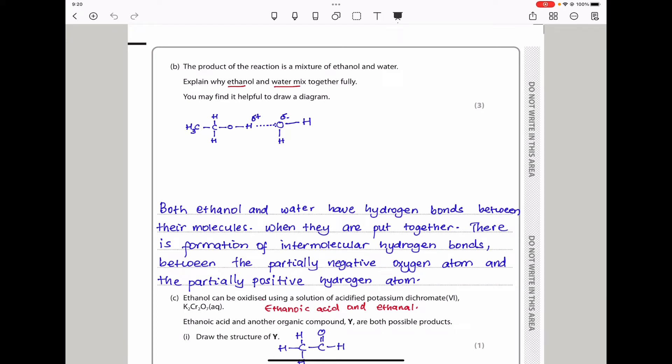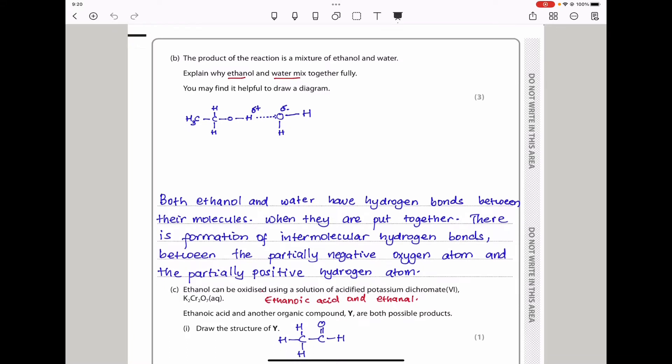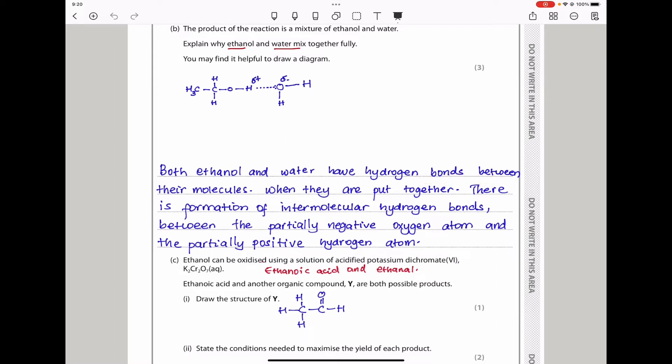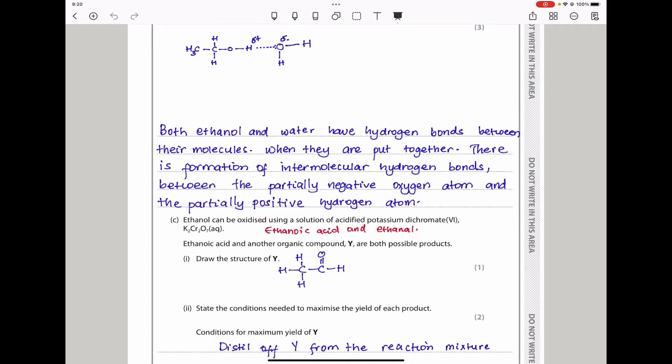The product of the reaction is a mixture of ethanol and water. They want you to explain why ethanol and water mix together fully. Here I draw ethanol. Ethanol can form intermolecular hydrogen bonds, London forces, as well as permanent dipoles. Water molecules can form the same type of bonding. They mix really well because they have the capability to form intermolecular hydrogen bonds. Both ethanol and water have hydrogen bonds between their molecules. When they are put together, there is formation of intermolecular hydrogen bonds between the partially negative oxygen and the partially positive hydrogen atom.